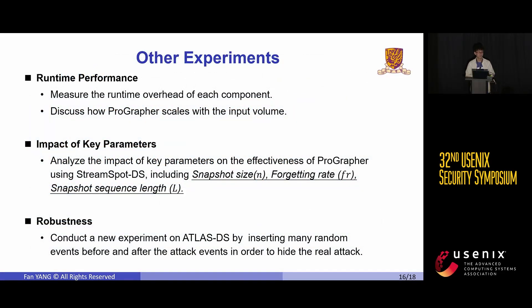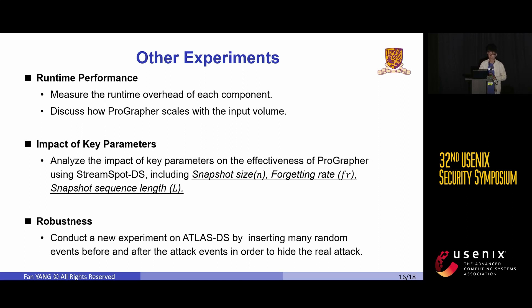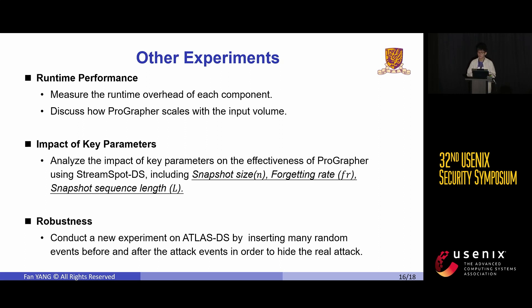In addition to the experiments mentioned earlier, we also conducted other experiments. The runtime performance experiments measure the runtime overhead and scalability of ProGrapher, and the impact of key parameters shows the influence of key parameters on ProGrapher's effectiveness. Additionally, the robustness experiments evaluate how robust ProGrapher is against random event insertion. Due to time constraints, we are unable to present the details here, but you can find our paper for a comprehensive understanding of ProGrapher's performance.